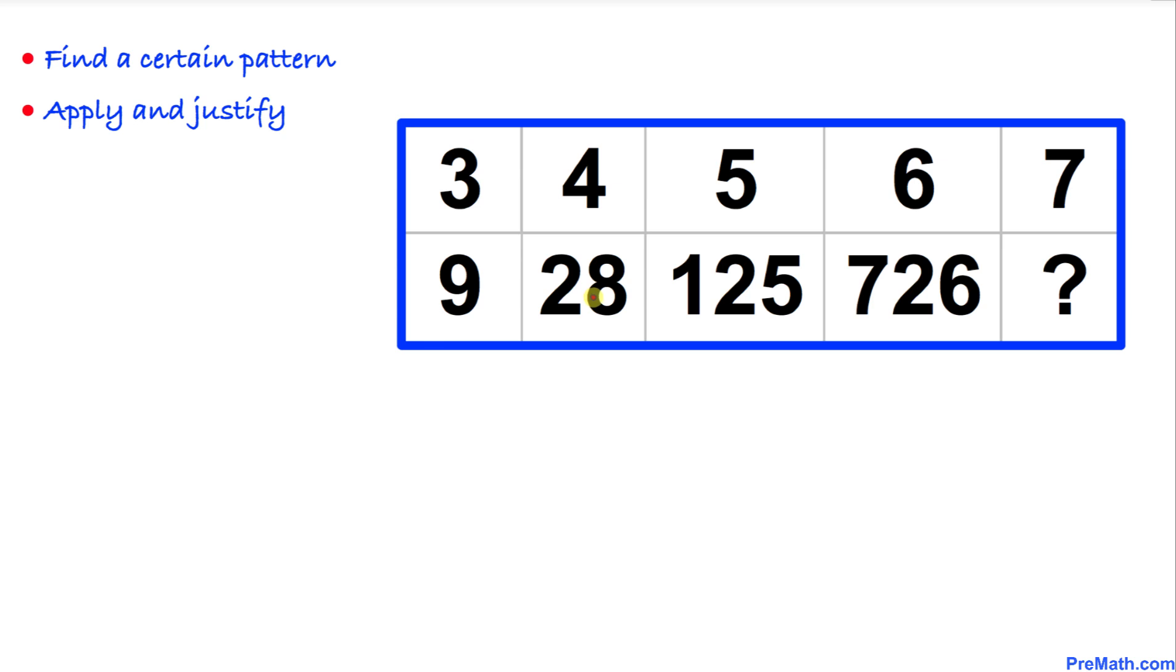So let's go ahead and get started with our solution to this puzzle. The very first thing we are going to do is find a certain pattern by meticulously looking at this problem, and once we have found the pattern we are going to apply and justify. We can see that there is a factorial of a number concept involved in this puzzle.